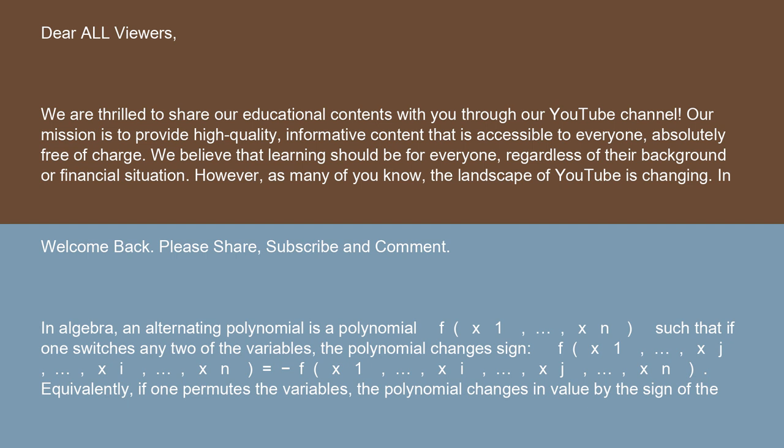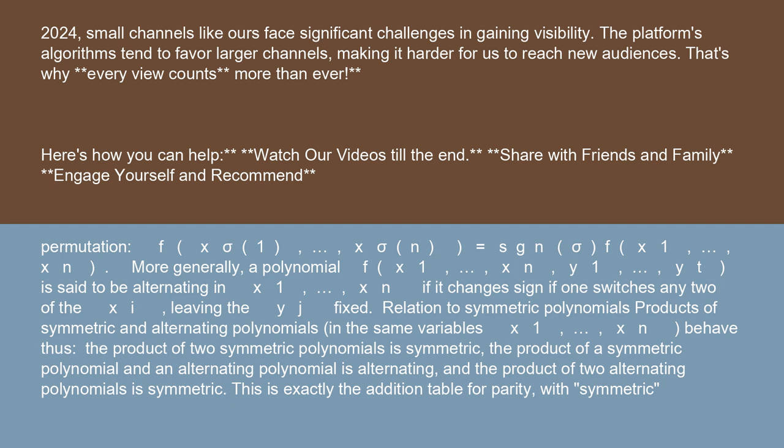Equivalently, if one permutes the variables, the polynomial changes in value by the sign of the permutation: f(x_σ(1), ..., x_σ(n)) equals sgn(σ) · f(x1, ..., xn).